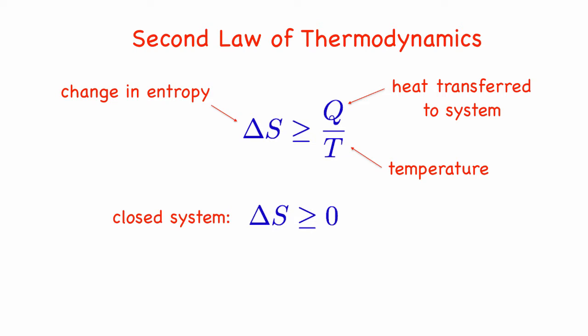That means for a closed system, where there can't be any transfer of heat or work, the change in entropy is always positive or zero. If we take the entire universe as our system, then it is truly a closed system, and we learned that the entropy of the universe can never decrease, so energy tends to get distributed more evenly over time.